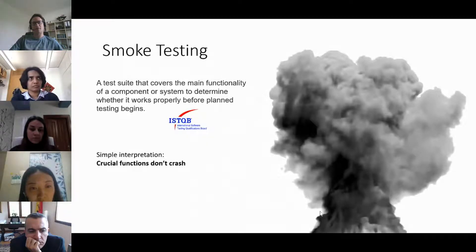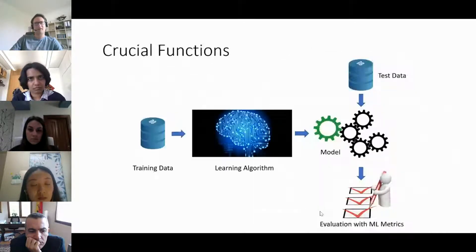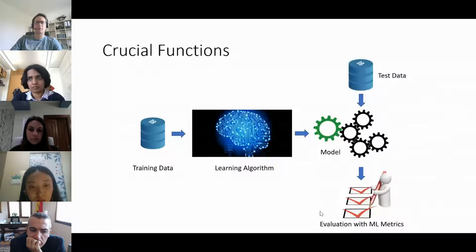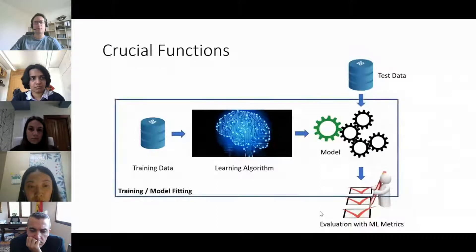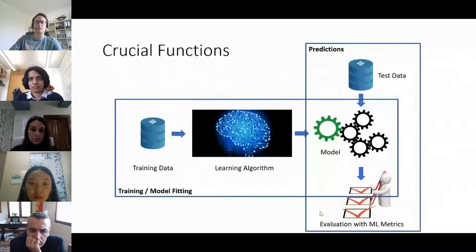Our simple interpretation is: crucial functions shouldn't crash. If we have a simple way to crash crucial functions, we probably have more important worries. For machine learning libraries, the crucial functions are the normal workflow: we train our learning algorithm with some data, get a model, throw in test data, and evaluate. With any data, we should be able to train, fit our model, and run predictions. So we're testing: can we train, and can we predict — or can we make the libraries crash?